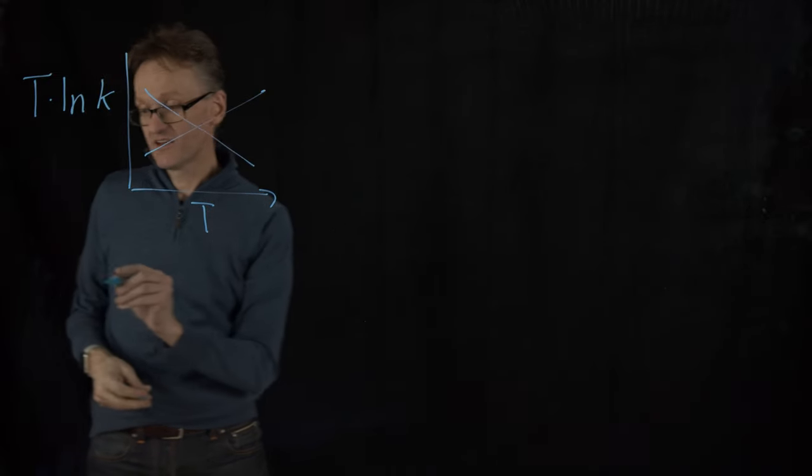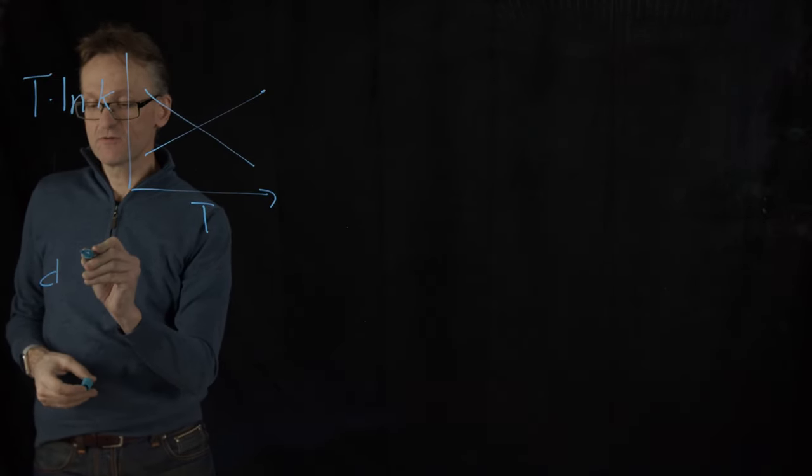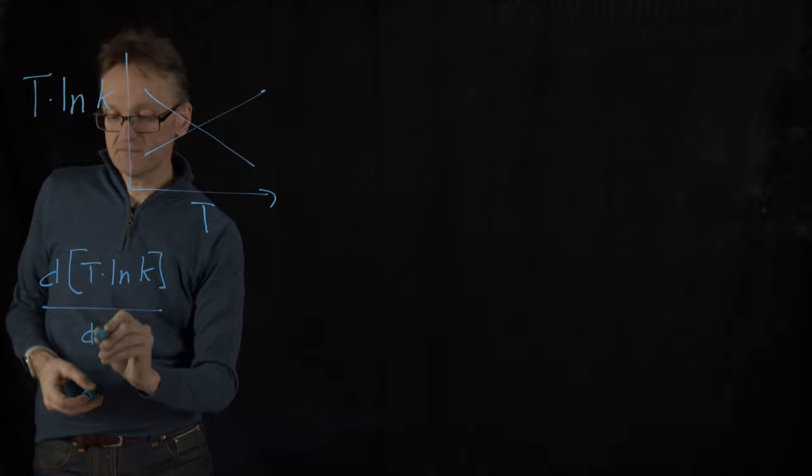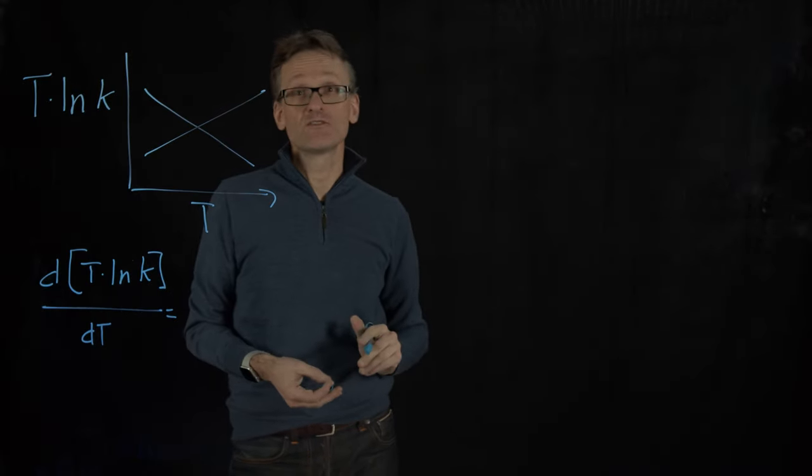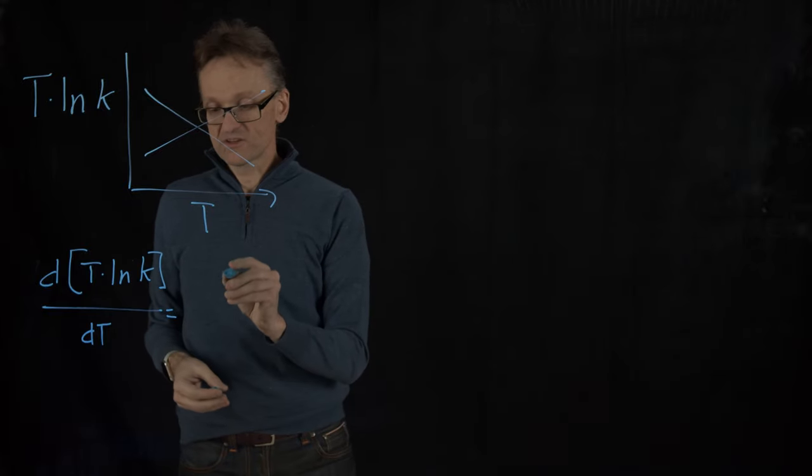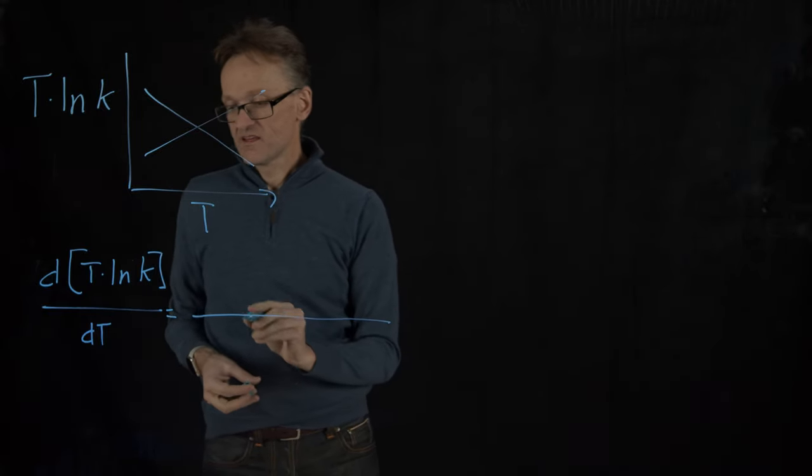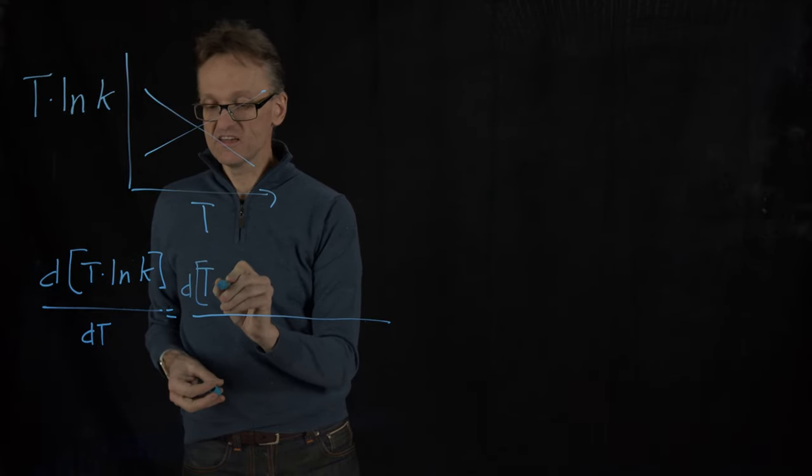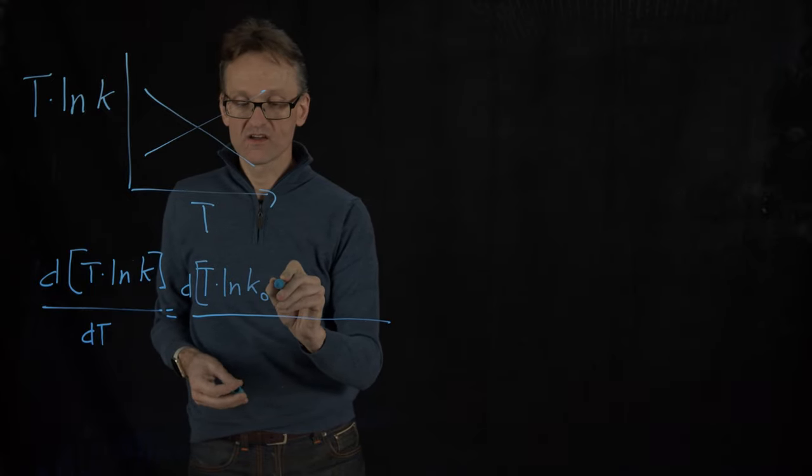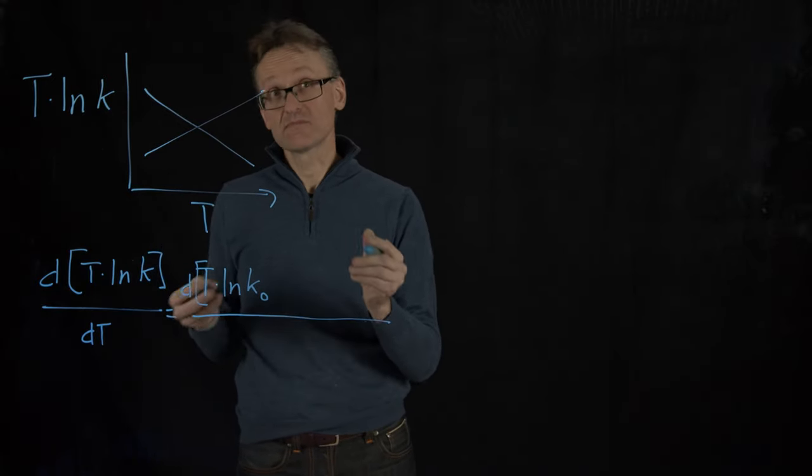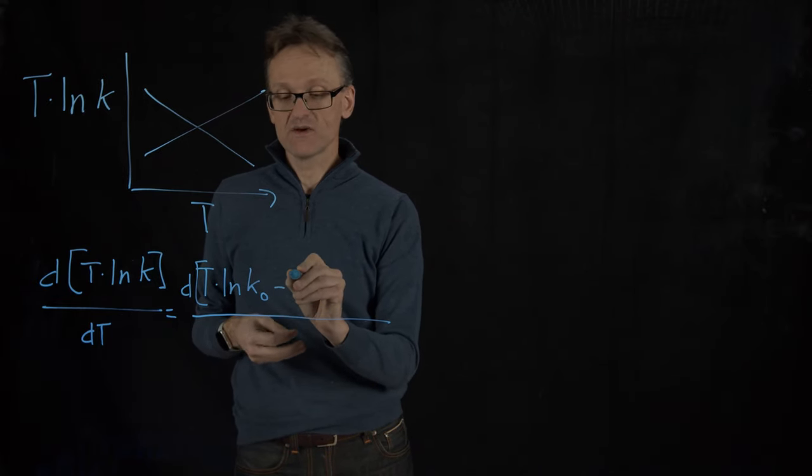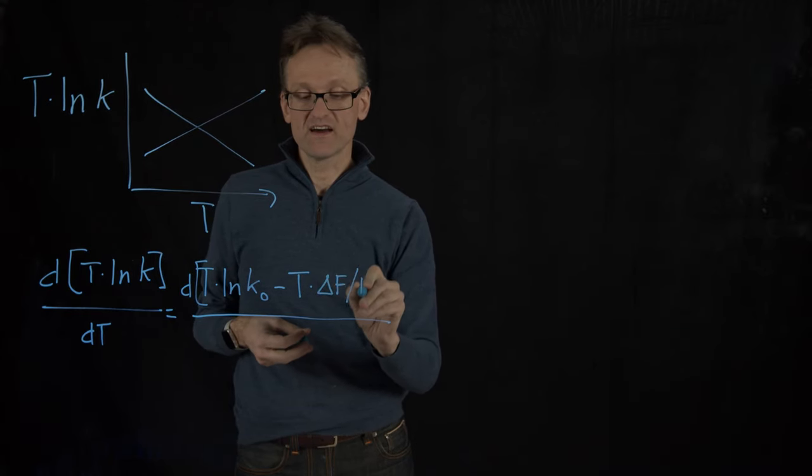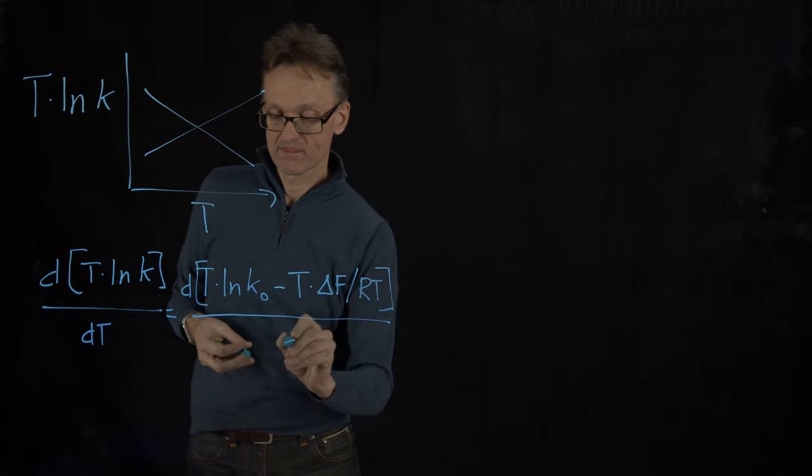So we calculate that derivative - we should calculate what is the derivative of T multiplied by ln k with respect to T. Much easier because we don't have one over T there. Well what does that say? That's going to be T times the derivative of T multiplied by ln k₀ plus ln and exp cancel each other and then a minus sign. So minus T multiplied by delta F divided by RT times dT.